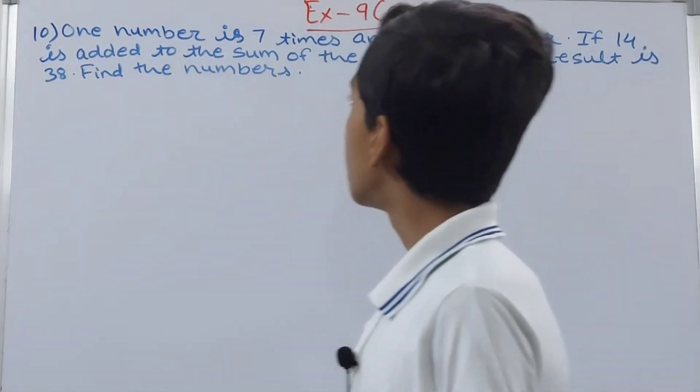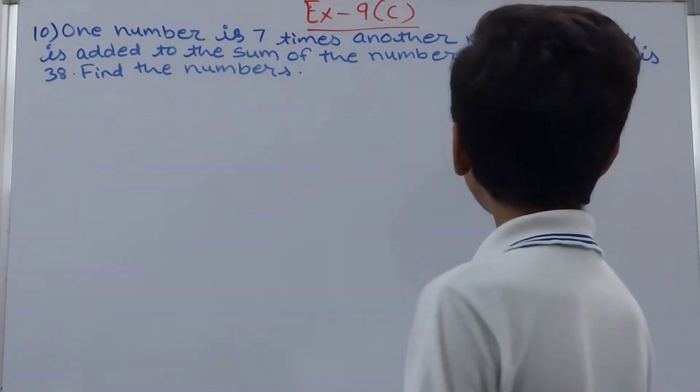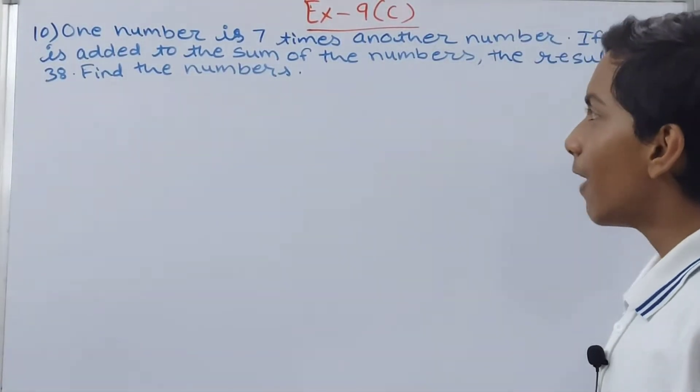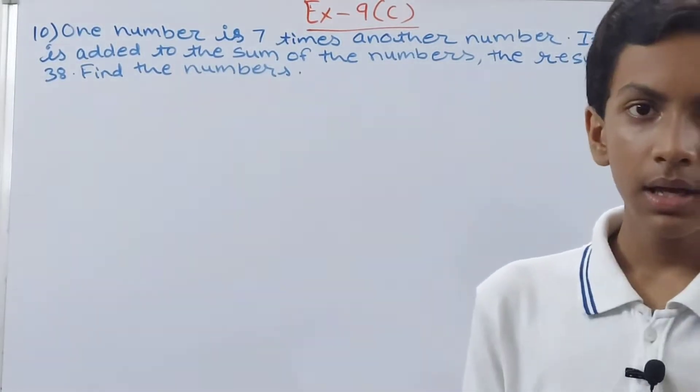This one is: one number is seven times another number. If 14 is added to the sum of the numbers, the result is 38. Find the numbers. So here we have to see one thing.